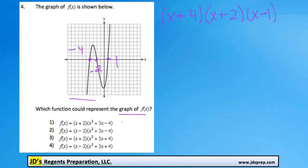And that's because if we set it equal to 0, you would get an x value of negative 4 here, negative 2, and positive 1. And those are the roots that we're looking for.